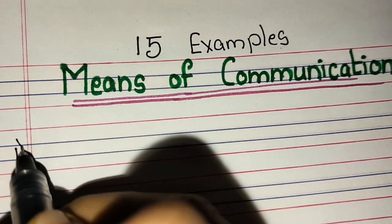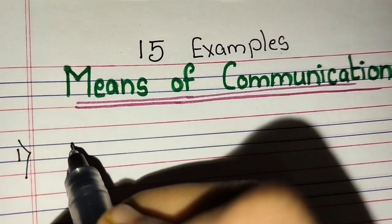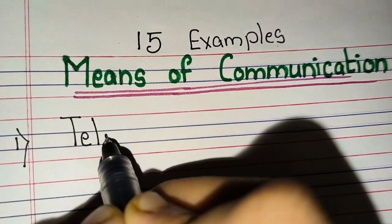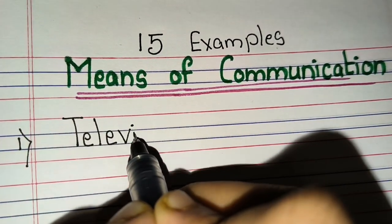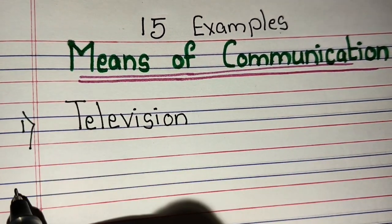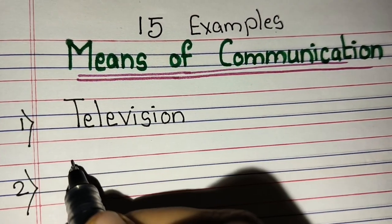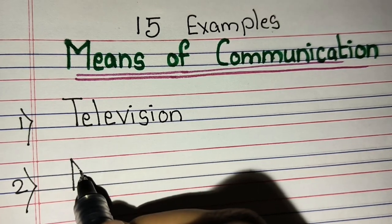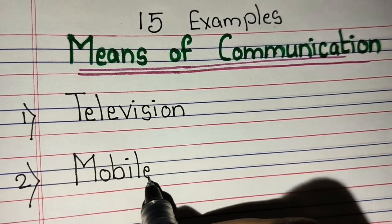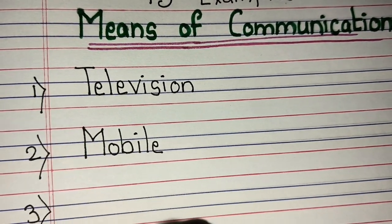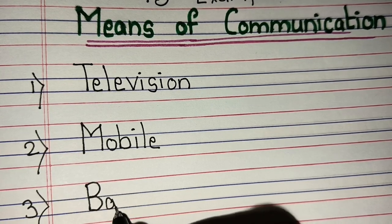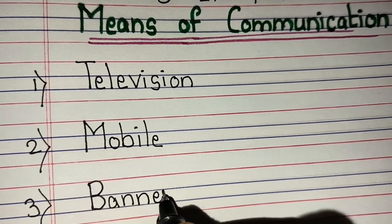Hello friends, welcome to Triyankush Learning Channel. Today we are going to learn 15 examples of means of communication. Let's start. First: television. Second: mobile. Third: banners.